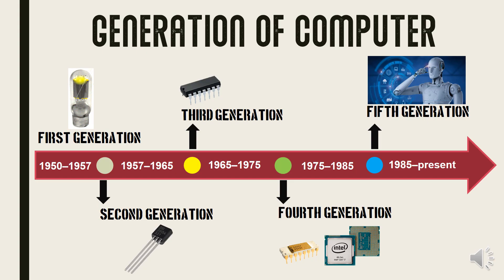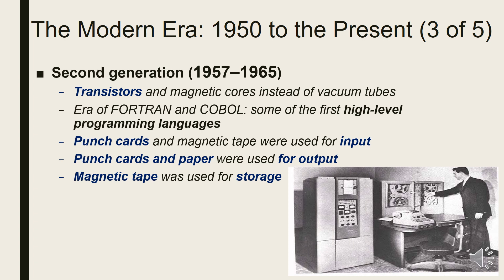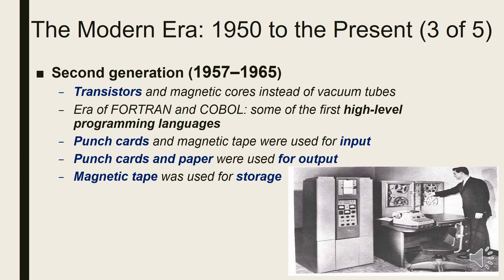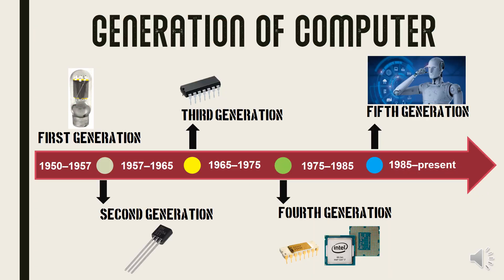Computers under 1957 to 1965 were considered the second generation of computers. They used transistors and magnetic cores instead of vacuum tubes, allowing them to become smaller, faster, cheaper, more energy efficient, and more reliable. It was the era of FORTRAN and COBOL, some of the first high-level programming languages. In this generation, punch cards and magnetic tape were used for input, punch cards and paper for output, and magnetic tape for storage.